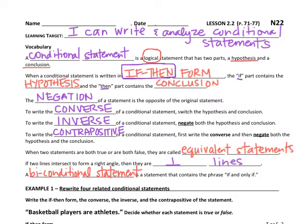Then we have the word negation. Negation is just putting the word not in a statement so that we can make a statement that's the opposite of the original statement. We're going to be inserting the word not so that we can oppose the original statement.